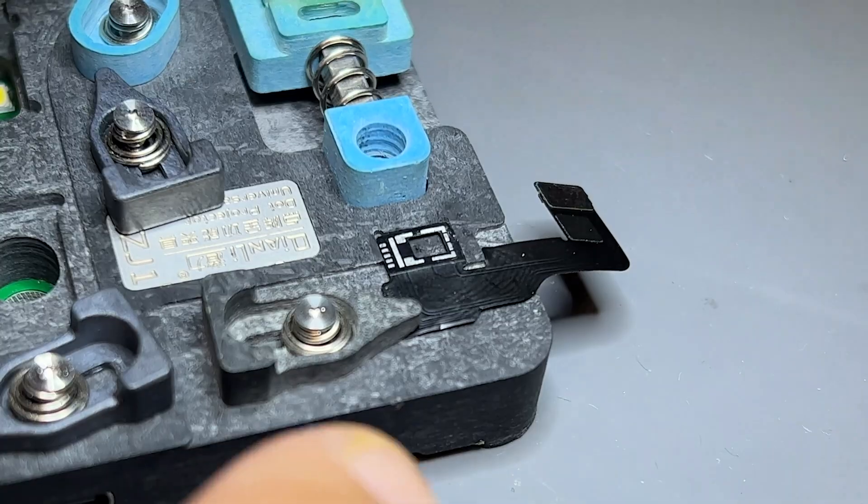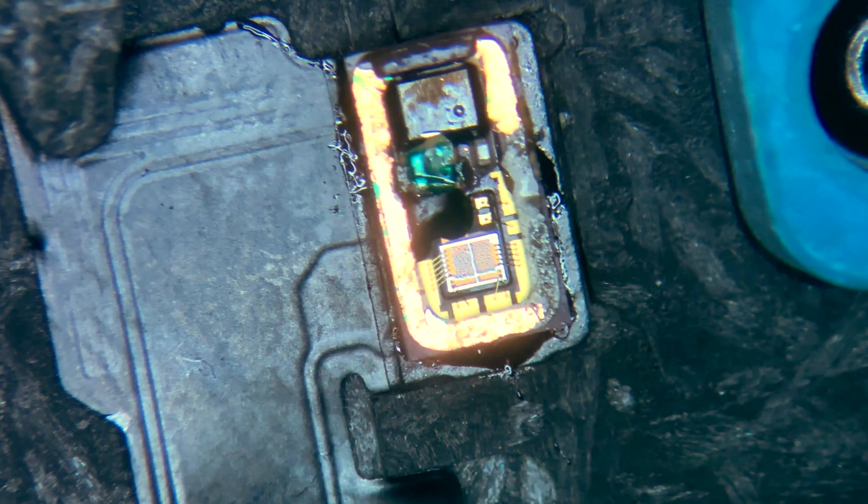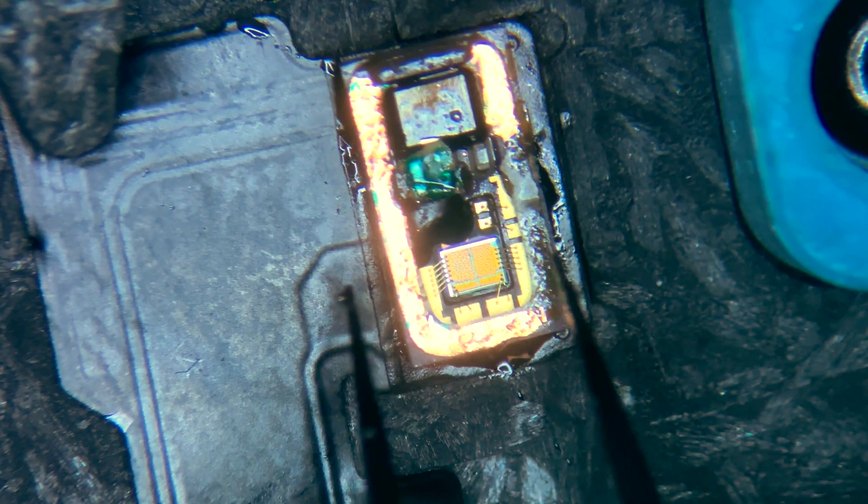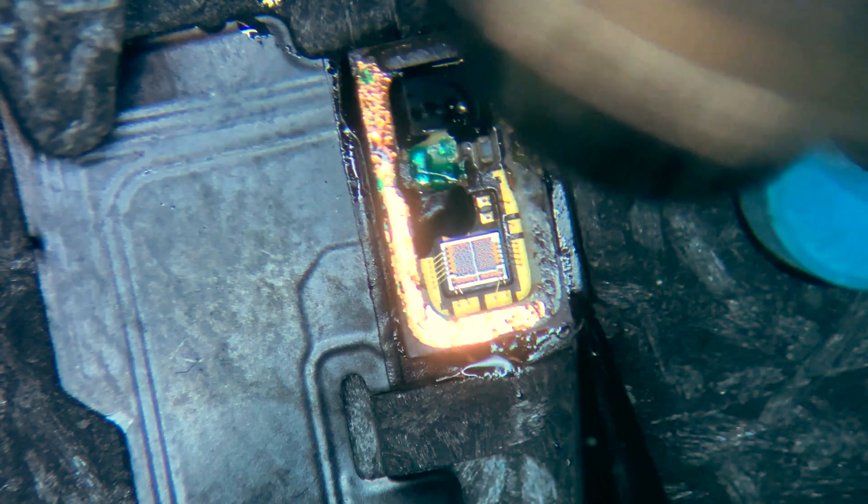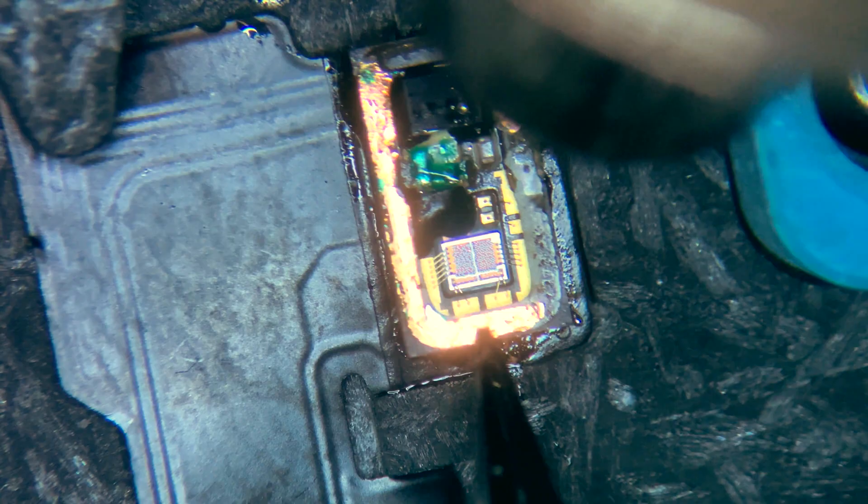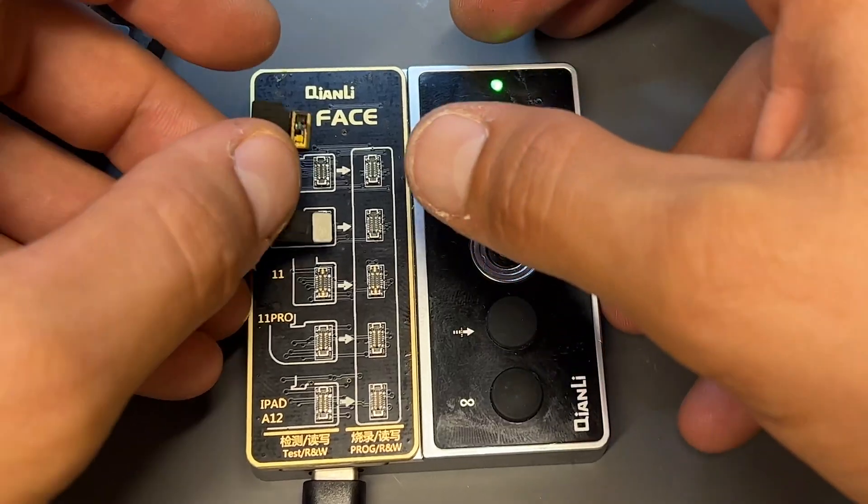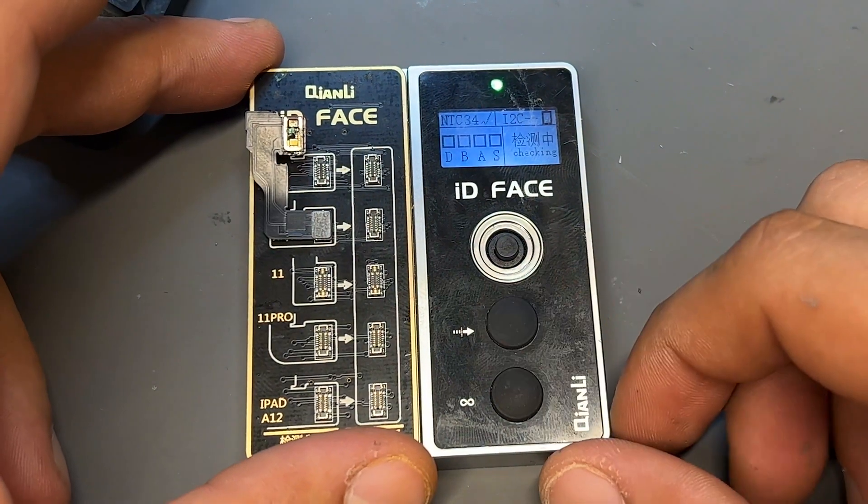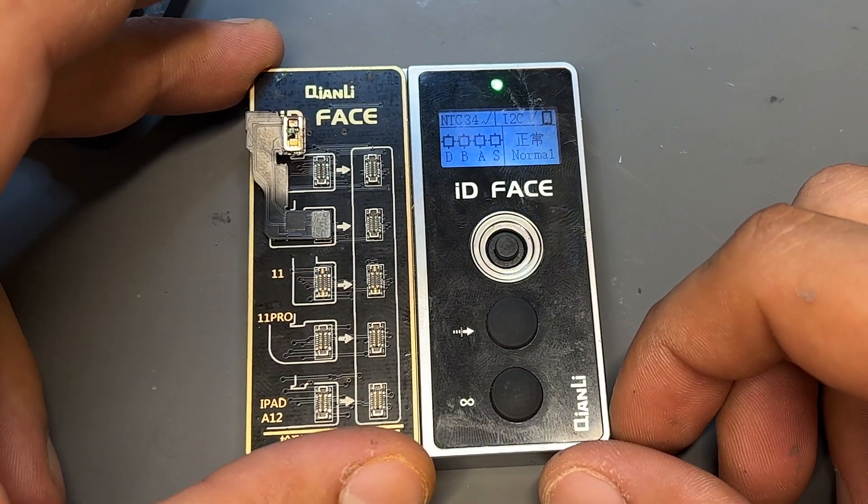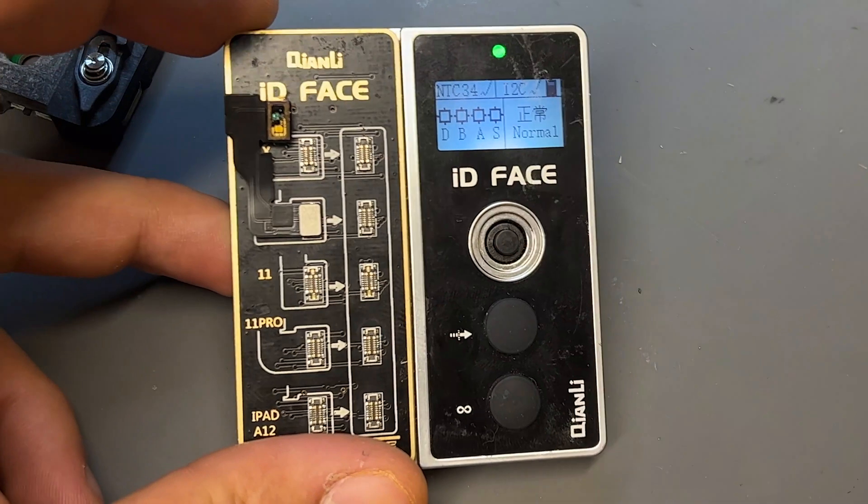There's a little slot on the jig that will hold it into place, then use hot air to melt the solder and secure it. A little nudge tells me that the solder has flowed properly and is now secured. Now I connect it to the ID face tool and check the repair. The four sunshines tell me that the dot projector is working properly now and the device will read normal.